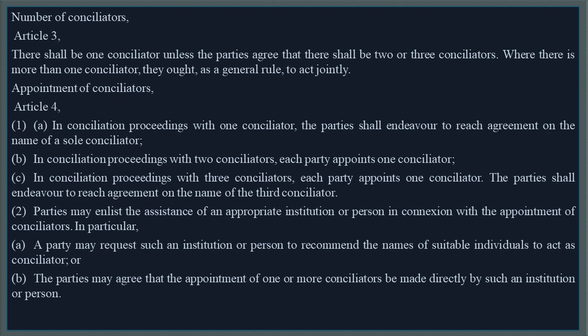Number of Conciliators — Article 3. There shall be one conciliator unless the parties agree that there shall be two or three conciliators. Where there is more than one conciliator, they ought, as a general rule, to act jointly. Appointment of Conciliators — Article 4. In conciliation proceedings with one conciliator, the parties shall endeavour to reach agreement on the name of a sole conciliator. In conciliation proceedings with two conciliators, each party appoints one conciliator. In conciliation proceedings with three conciliators, each party appoints one conciliator, and the parties shall endeavour to reach agreement on the name of a third conciliator.